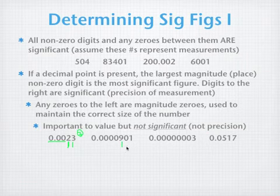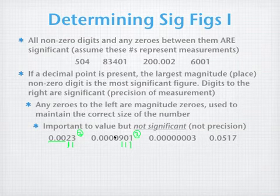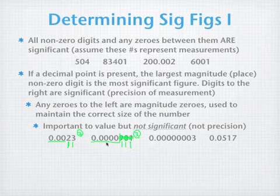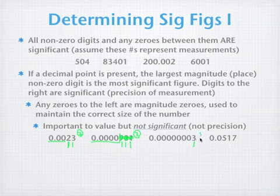Here, the 9 is our first non-zero digit. Every digit including the zero that follows counts — we have three significant figures. The leading zeros don't count. If you covered up the significant digits, there are no significant figures in the leading zeros alone. In a number with a single non-zero digit to start, we only have one sig fig. And in a number with three digits following the first non-zero digit, we have three significant figures.